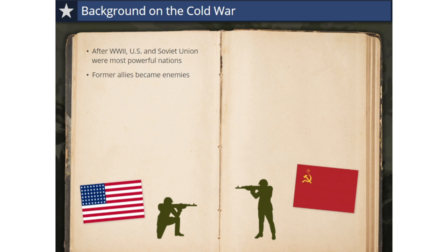America and the Soviet Union differed on issues of human rights, individual liberties, economic philosophies, and religious freedom. The U.S. was a capitalist democracy, a nation of free ideas and free trade. But the Soviet Union was a communist nation. Communism is an economic idea that all people should be equal and have the same, by any means necessary.